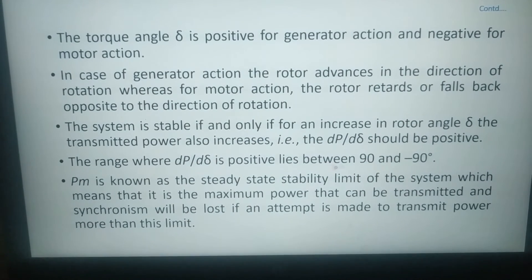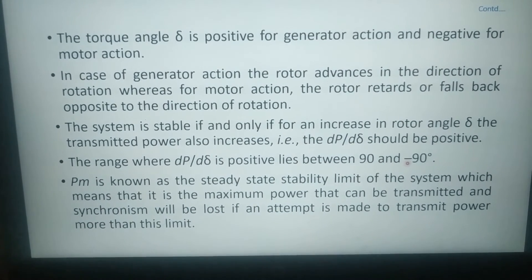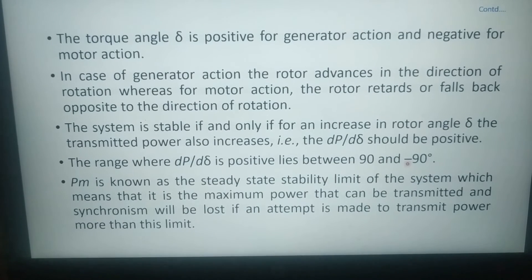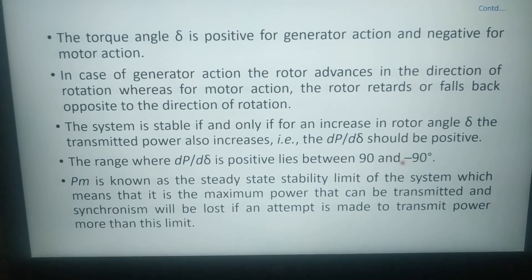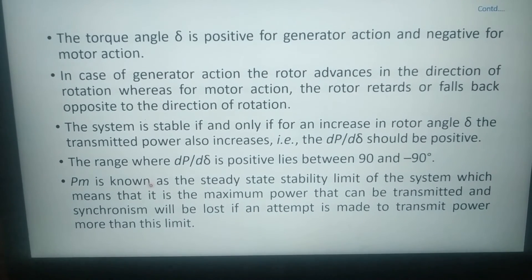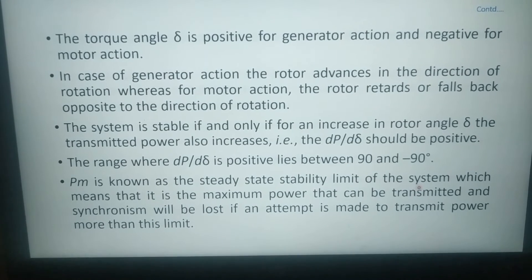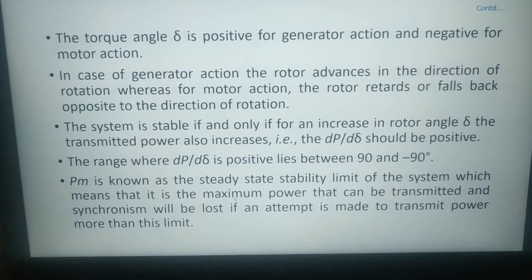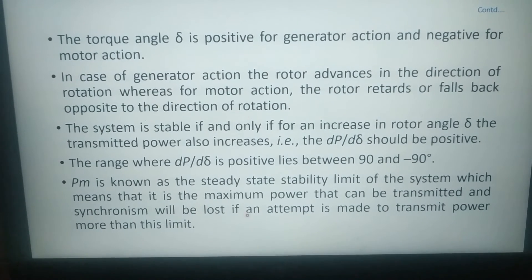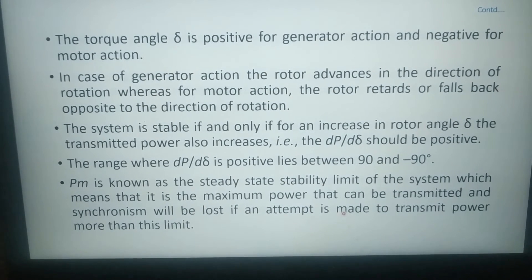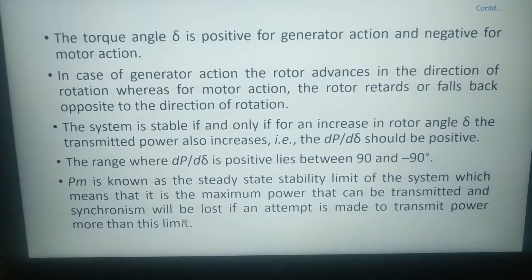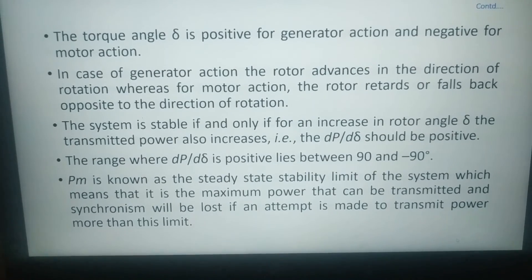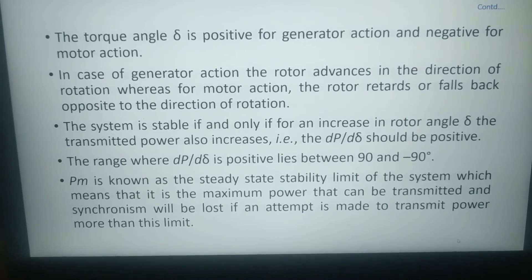The range where dP/d(delta) is positive lies between minus 90 and plus 90 degrees. Pm is known as the steady state stability limit of the system, which means it is the maximum power that can be transmitted and synchronism will be lost if an attempt is made to transmit power more than this limit.